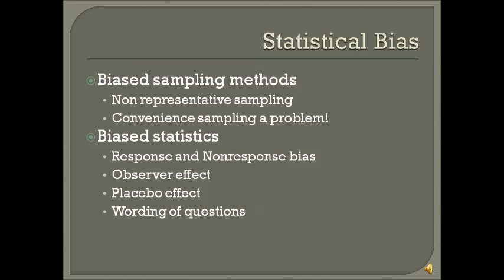Sometimes just being observed can have an effect. Another important effect is the placebo effect, which can happen in experiments. If you're giving somebody a pill, they may feel better just because they're getting something, even if it isn't the actual treatment. Also, the wording of questions and vague or unclear wording can cause bias in your statistics — people may answer differently based on how questions are worded. It is important to consider these sources of statistical bias. In the next video, we'll discuss how you can reduce bias and the importance of variability in your data.